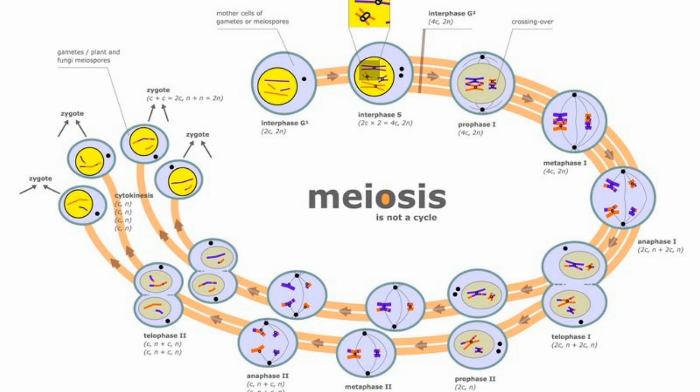Cell division occurs via two methods, mainly termed mitosis and meiosis. Both serve to divide the cells, although at different sites and for different functions.